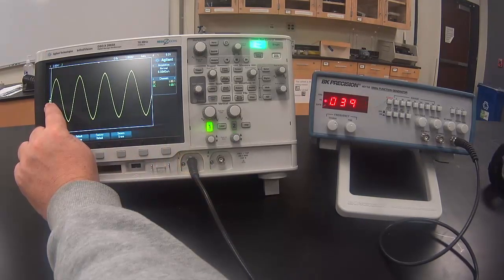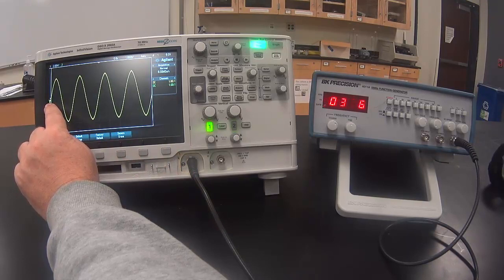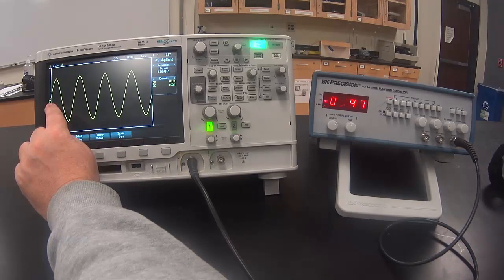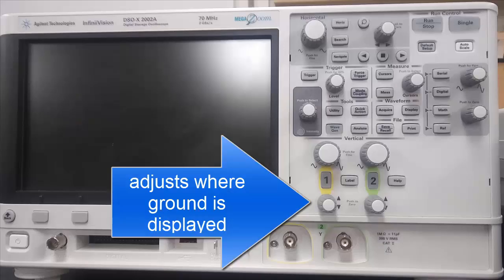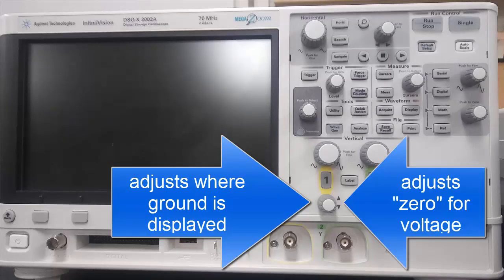The zero of voltage is also called the ground and it is represented by a little voltage symbol here on the edge of the graph. This knob adjusts where the ground is displayed on the vertical axis. It adjusts the zero for the voltage axis.